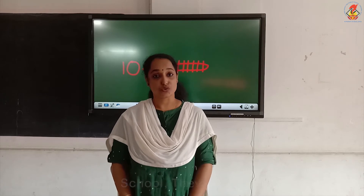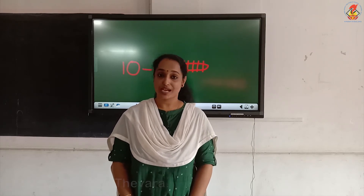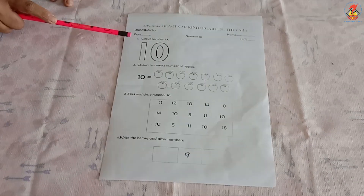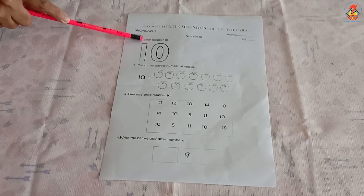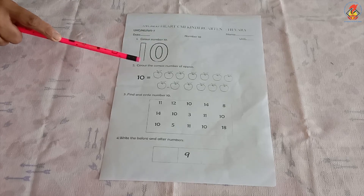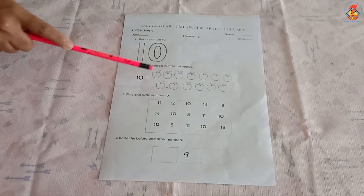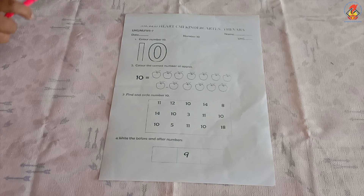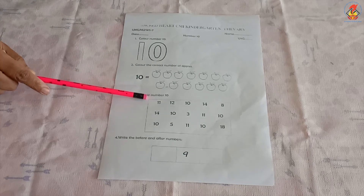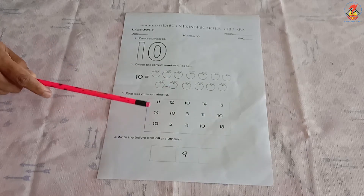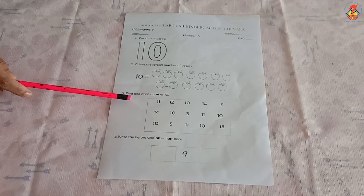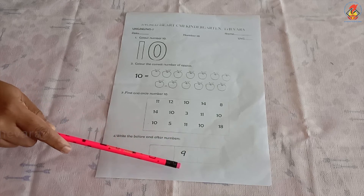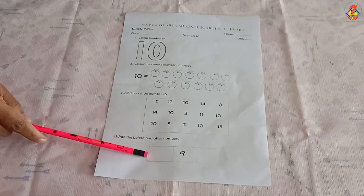I hope you all understood how to draw a bundle for number ten and how to write number ten for a bundle. We have five worksheets for number ten. In the first worksheet, the first question is: color the number ten. The second question is: color the correct number of apples. Here there are some apples — you have to count and find the ten apples and color them. The third question is: find and circle number ten. In the box there are some numbers; find number ten and circle it. The fourth question is: write the before and after number.